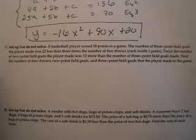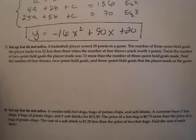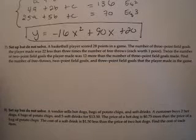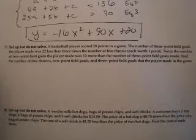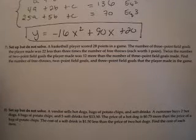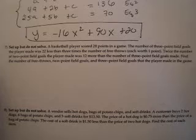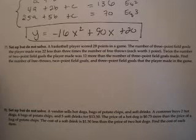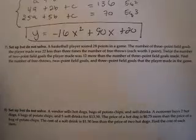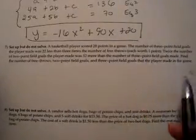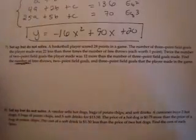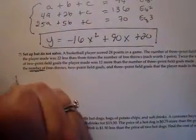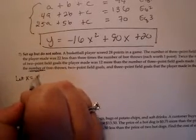A basketball player scored 28 points in a game. The number of three-point field goals the player made was 22 less than three times... find the number of free throws, two-point field goals, and three-point field goals that the player made. The first thing we want to identify is what we're looking for — 'find the number of' is important.